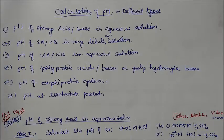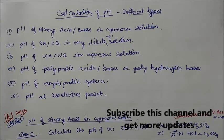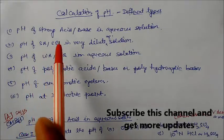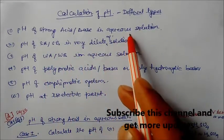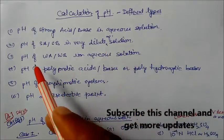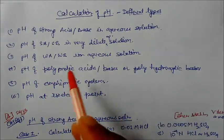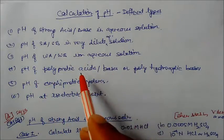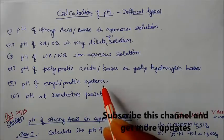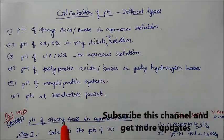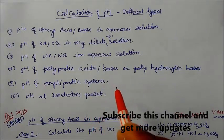Welcome to this session. We will learn how to calculate the pH of different acids and bases. The types we will cover are: pH of strong acid and strong base in aqueous solution, in very dilute aqueous solution, pH of weak acid and weak base, pH of polyprotic acids or bases, pH of amphiprotic systems, and pH at the isoelectric point. These are the different types of pH calculations usually asked in board and competition examinations.